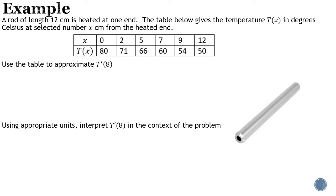Third and final example: A rod of length 12 centimeters is heated at one end. The table gives the temperature T(x) in degrees Celsius at selected values of x centimeters from the heated end. So x is how far along the rod from the heated end, and T(x) is the temperature there. We're going to use the table to approximate T′(8) — the instantaneous rate of change in temperature when you are 8 centimeters from the heated end.